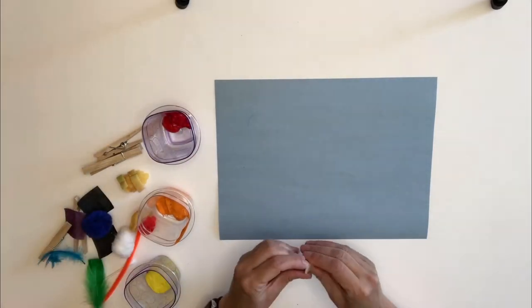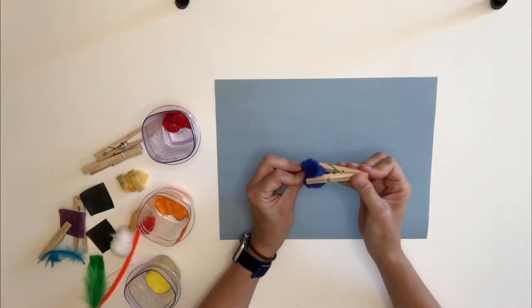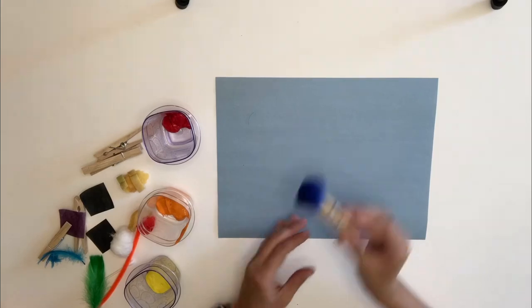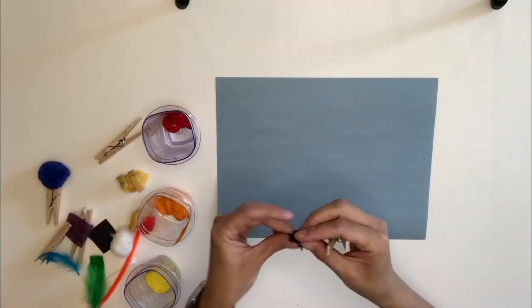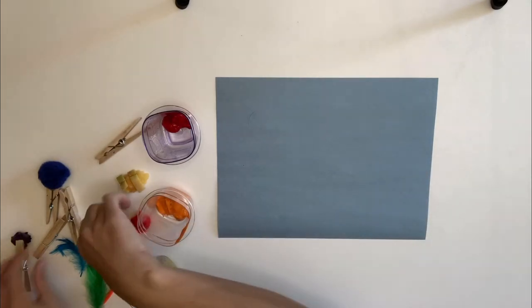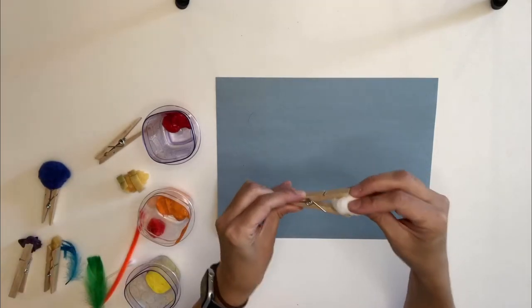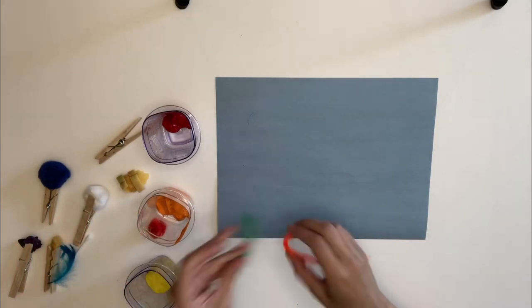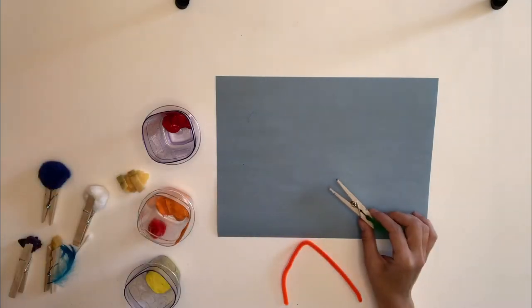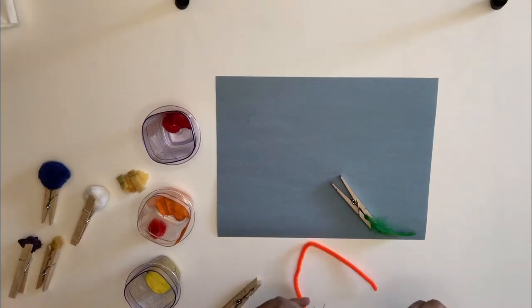Then next, I want you to take all the things that you found around your house and put them into your clothespins. So we're gonna clip them in there. So that way it makes it into a paintbrush and we can paint with it. So I'm gonna do that with all of my different materials. I'm gonna make a little blob of my tissue paper, and then I'm gonna put one of my sponges in. Here's my cotton ball, my feather, and I'm gonna need some more clothespins.